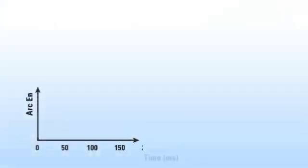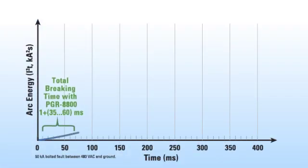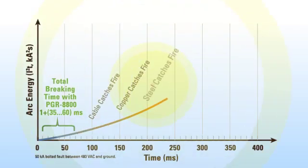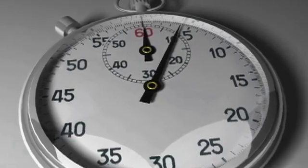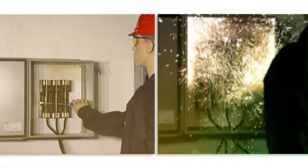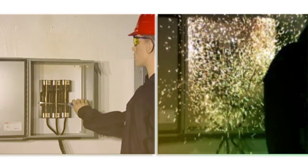An arc flash begins with a small spark. As the electrical system continues to feed the spark, it grows in heat and intensity. In less than one second, the damages can multiply to a dangerous explosion and fire. That's why time is critical. Removing power quickly minimizes the released energy and the resulting damage.